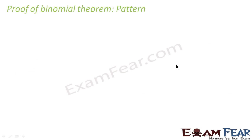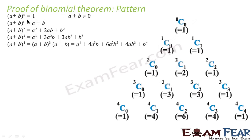Let's try to prove the same thing using pattern. If you see this pattern: when you say (a+b) to the power 0, this is 1, where obviously a+b should not be equal to 0. If you say (a+b) to the power 1, this becomes a+b. When you say (a+b) to the power 2, it becomes a² + 2ab + b². When you say (a+b) to the power 3, you get that expansion. When you say (a+b) to the power 4, you get a⁴ + 4a³b + 6a²b² + 4ab³ + b⁴.